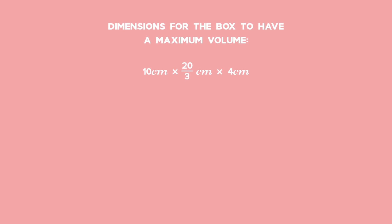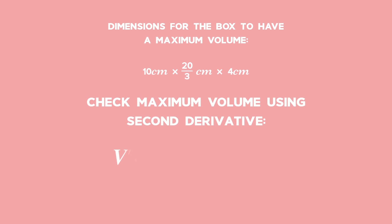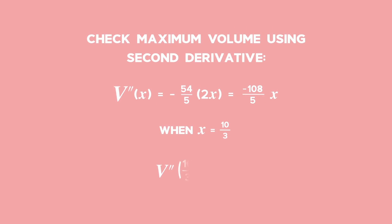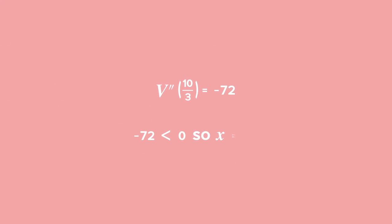We can use the second derivative to check that the volume is a maximum at x = 10/3. The second derivative equals -54/5 × 2x = -108x/5. When x = 10/3, the second derivative equals -72. Since -72 < 0, the volume is a maximum at x = 10/3.